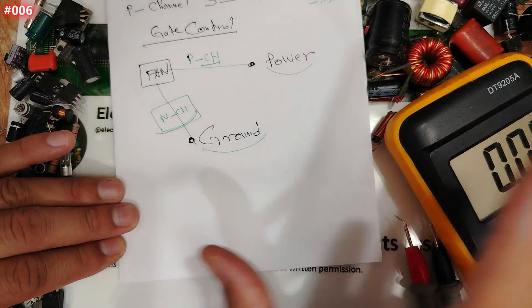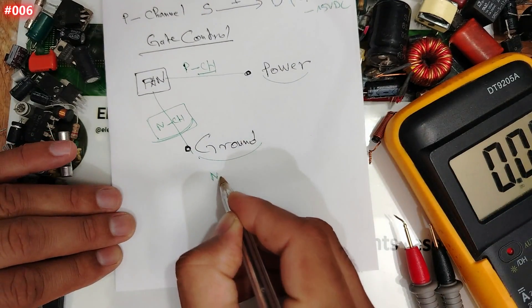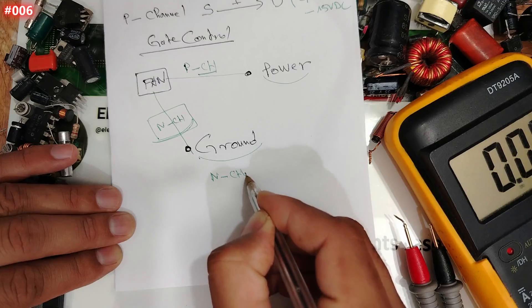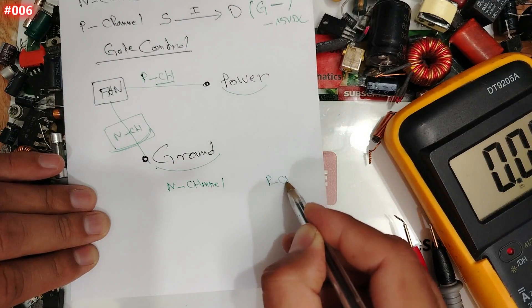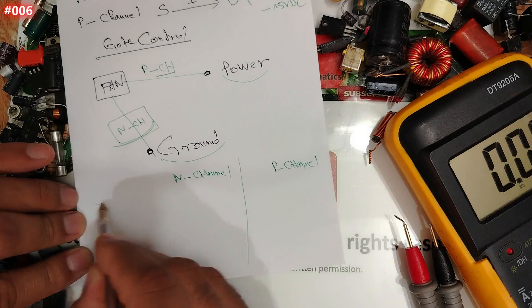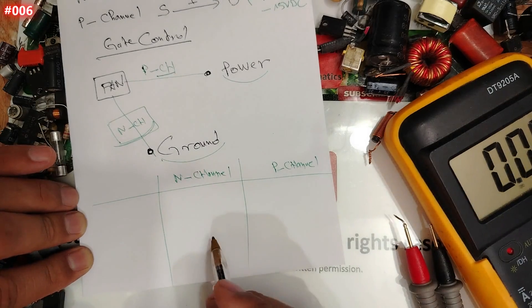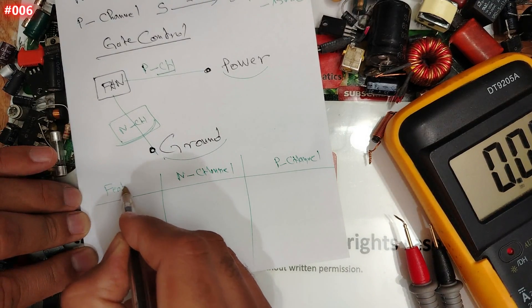So right now, guys, I will make a comparison between N-channel MOSFET. Let's see, here we have N-channel, and here we have P-channel. Let's see, here, for example, we have features.